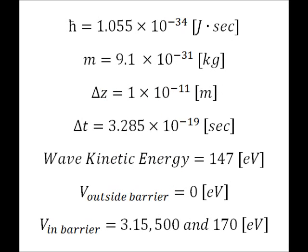The wave packet was initialized with a kinetic energy of 147 electron volts. The intuition is that if the potential barrier is higher than the wave energy, then it should completely reflect. However, due to quantum tunneling, this is not always the case. The first simulation clip will show a barrier height of 3.15 electron volts, where the wave will pass completely through. The second will be a 500 electron volt barrier, which will completely reflect the wave. And the third will have a height of 170 electron volts, where we will see quantum tunneling.